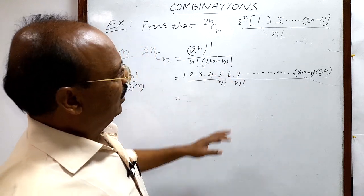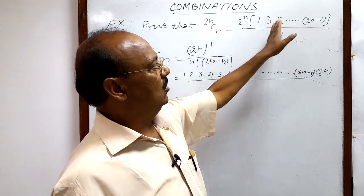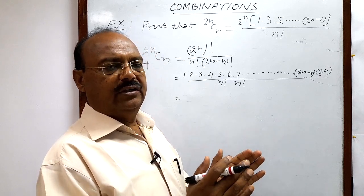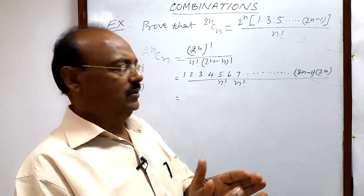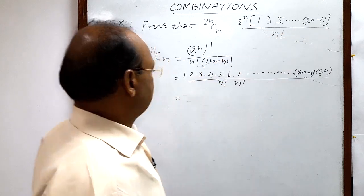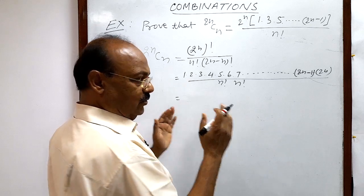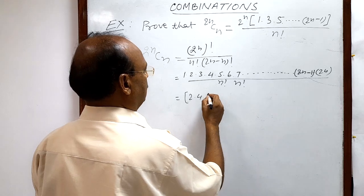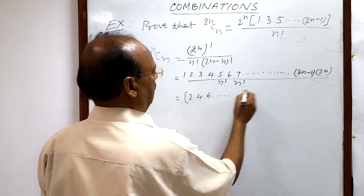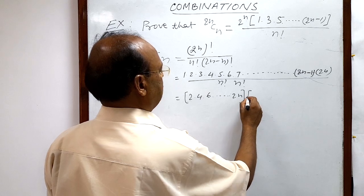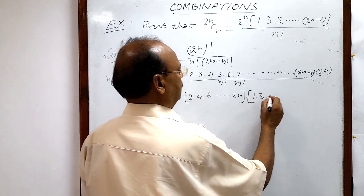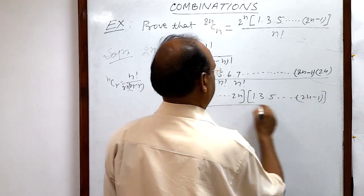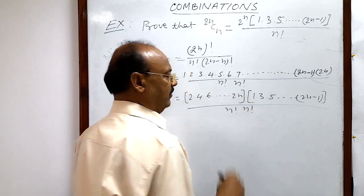Now, inside this bracket only odd numbers will remain after separation. So we have to make a separate collection of even numbers and odd numbers so that we can get this expression. We will make a group of all even numbers: 2 into 4 into 6 up to 2n, and odd numbers: 1 into 3 into 5 up to (2n minus 1), divided by n factorial into n factorial.